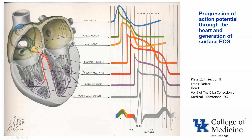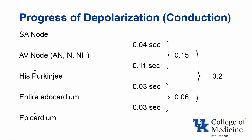This shows the propagation of the action potential through the heart. The action potential of the SA node, the action potential of the AV node, and then the action potential through various components of the His-Purkinje system all combine to generate the surface ECG. The progress of depolarization between the SA node and the AV node takes about 4 hundredths of a second. From the AV node to the His-Purkinje, about 11 hundredths of a second, so the PR interval is about 15 hundredths of a second. It then only takes about 6 hundredths of a second for depolarization of the rest of the heart.